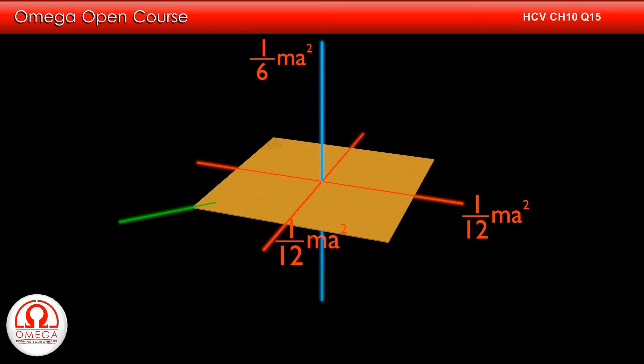We have to find moment of inertia about the diagonal. Let this moment of inertia be i. If we draw the other diagonal, the moment of inertia about this axis 2 is i.